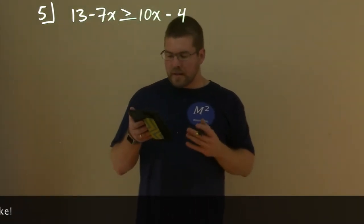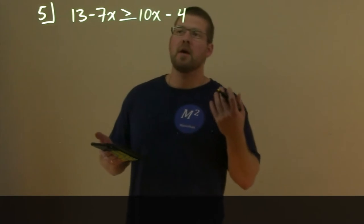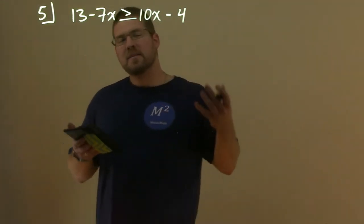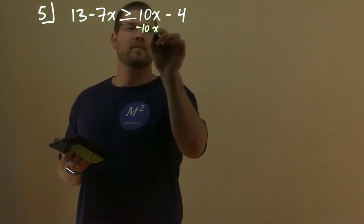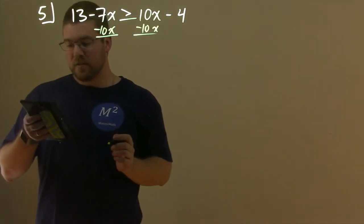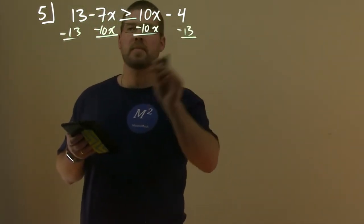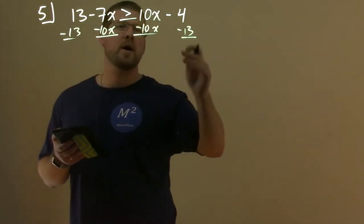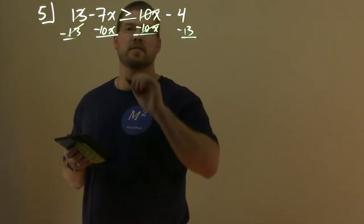Alright, so what I like to do is bring my like terms together. To do that, there's a few ways, it depends on the problem, but in this case I'm going to bring my x's to the left. I subtract a 10x to both sides here, and I actually can also subtract a 13 to both sides. So, I'm going to bring my numbers to the right, my variables to the left. 13's cancel here, the 10x's cancel here.